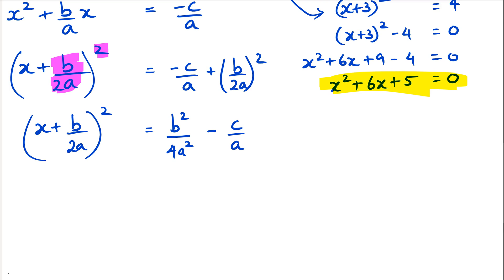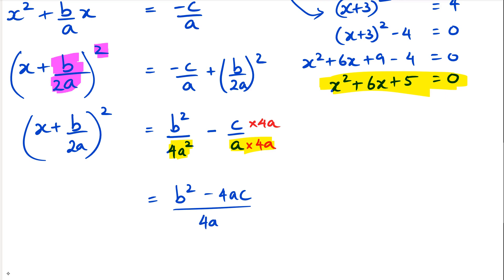At this point, on the right-hand side we need to combine into one fraction. Multiplying the numerator and denominator of c/a by 4a gives 4a² on both denominators. So we multiply the numerator by 4a and we get (x + b/(2a))² = (b² − 4ac) / (4a²).